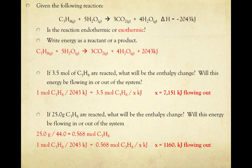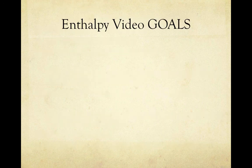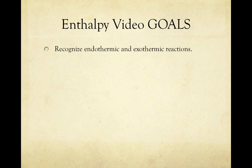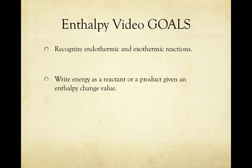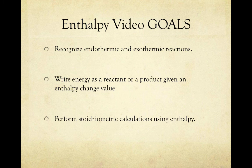Welcome back — here's what you should have gotten. That brings us to the end of this video. Let's review our goals. We learned how to recognize endothermic and exothermic reactions: endothermic reactions are when energy enters the system, whereas exothermic reactions are where energy leaves the system. We learned to write energy as a reactant or a product: if delta H is positive, it's endothermic and enthalpy is a reactant; if delta H is negative, it's exothermic and enthalpy is a product. And we learned to perform stoichiometric calculations using enthalpy.